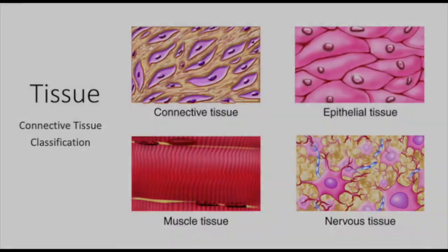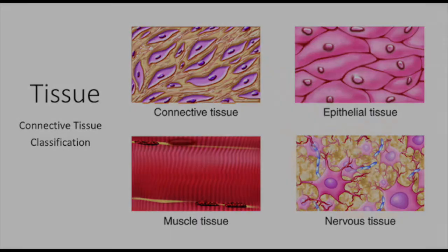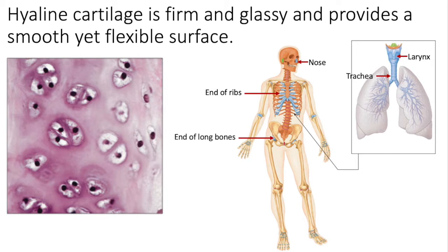On this page we will explore cartilage, bone, and blood — all of them are connective tissues. They adhere to that very key characteristic of connective tissue: a few cells contained within an abundant extracellular matrix. We're going to start with cartilage. There are three types of cartilage: hyaline cartilage, elastic cartilage, and fibrocartilage.